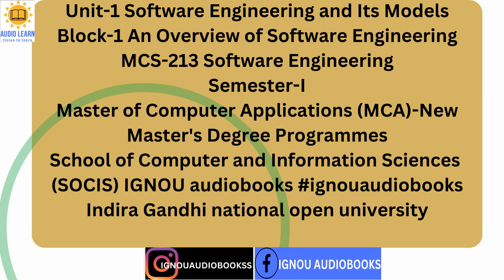Level 4 KPAs: 1. Quantitative Process Management (QPM) — defines quantitative standards for the software process. 2. Software Quality Management (SQM) — develops quantitative understanding of the quality of software products and achieves specific quality goals. Level 5 KPAs: 1. Defect Prevention (DP) — discovers the causes of defects and devises techniques to prevent them from recurring. 2. Technology Change Management (TCM) — continuously upgrades according to new tools, methods, and processes. 3. Process Change Management (PCM) — continually improves the software processes used in the organization to improve software quality, increase productivity, and decrease cycle time for product development.